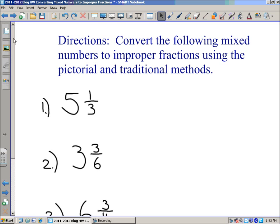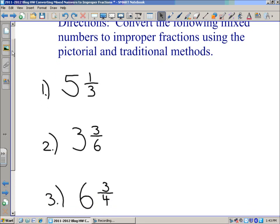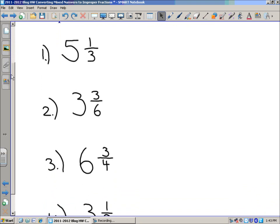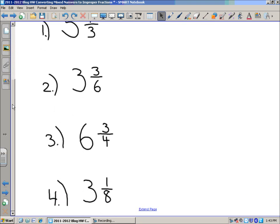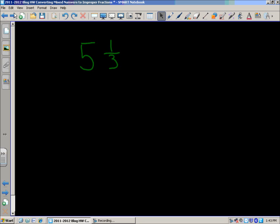We have four different problems. If you want to write these down, if you're doing this at home, go ahead and do that. The first one is 5 and 1 third, second is 3 and 3 sixths, third is 6 and 3 fourths, and the last one, number 4, is 3 and 1 eighth. Okay, so let's go to it.